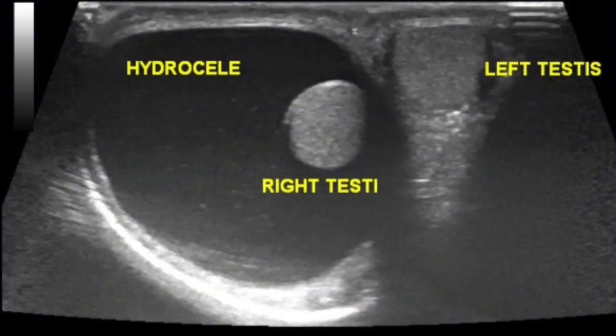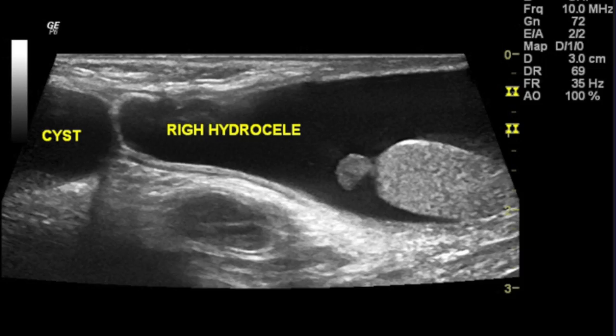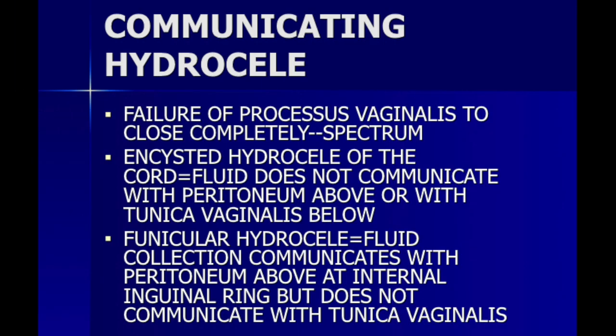Case number one: a young boy with right scrotal swelling presenting for ultrasound. Ultrasound reveals scrotal hydrocele, but in the sagittal section you can see fluid in the right inguinal region as well. There is fluid in the hemiscrotum and fluid in the inguinal region. Irrespective of the specific diagnosis, we are dealing with a type of communicating hydrocele. A communicating hydrocele is due to failure of the processus vaginalis to close completely.